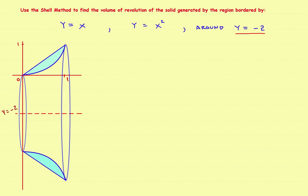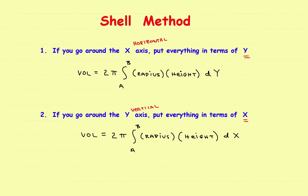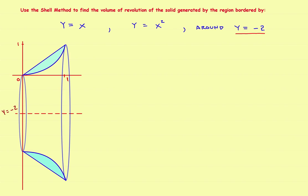Just a reminder on the formula: since we're going around a horizontal axis, we'll use the top formula and put everything in terms of y. The problem is just like all the other Shell Method problems — you've got to find the radius R and the height. If you can find the radius and the height, then you're good to go on the rest of the problem.